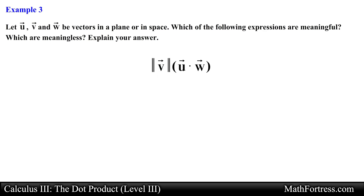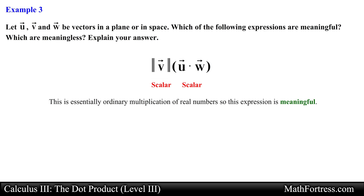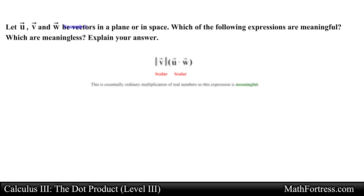The next expression is the magnitude of vector v times the quantity (u dot w). The quantity u dot w simplifies to a scalar, which is then multiplied by the magnitude of vector v, also a scalar. This is essentially ordinary multiplication of real numbers, so this expression is meaningful.